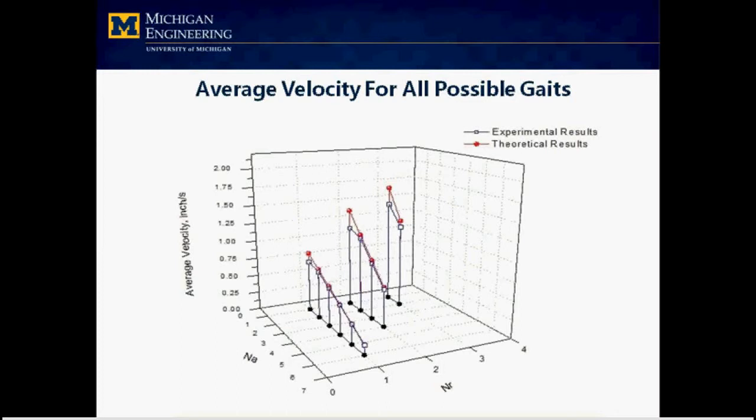On one hand, average speed of the robot varies with the gates. On the other hand, backward slippage of the anchor may happen, which can further affect the speed of the robot.